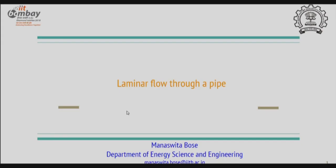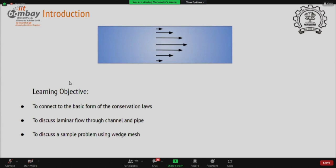Good morning everyone. You are familiar with laminar flow through a pipe and perhaps also a channel. I'll take you through these example problems highlighting some salient features. The learning objectives are three: first, to connect the basic form of conservation laws to discuss laminar flow through channel and pipe. I intentionally took both problems because their schematic representation is exactly the same, yet they are different. We will also discuss a sample problem using a simple wedge mesh.